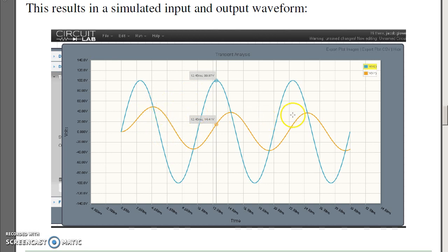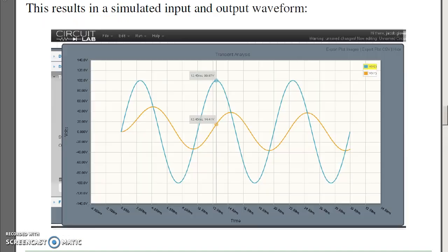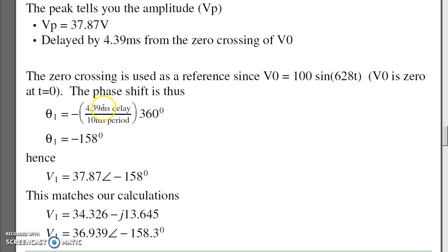Here's the output. The first part is the transient. Usually look a couple cycles later to see steady state. The amplitude, you can see, and the time delay. From the amplitude, the peak is 37.8 volts. The time delay is 4.39 milliseconds. So right here, this is the zero crossing. That's t equals zero for the sine wave. Here's the peak. Cosine is a peak. That time delay is 4.7 milliseconds. The period is 10 milliseconds. The phase shift then is 4.39 milliseconds over the period times 360. The output is 37.87 volts and minus 158 degrees. That matches our calculations. Take the rectangular form, convert to polar, and you have basically the same answer.